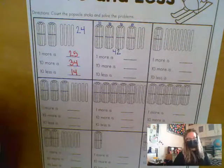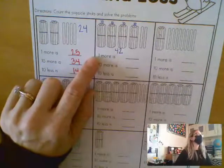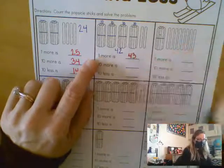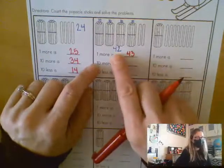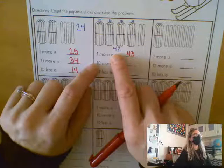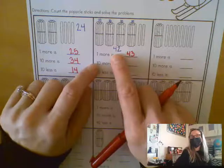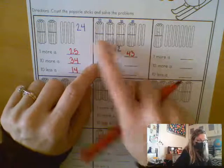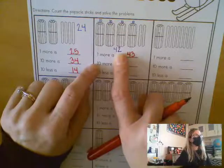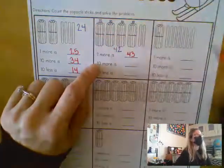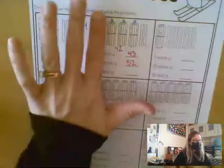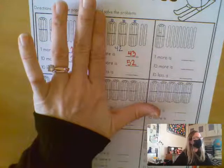Mateo, what would one more Popsicle stick be? 43 would be one more. Brilliant. Mateo, what would 10 more Popsicle sticks be? Yeah, so we have 42. If I add 10 more, what would I have? If I add another bundle of 10 here, how many would I have? 52. And if I take away one of these 10s, Drew, how many would I have? 32.